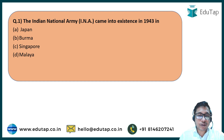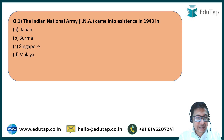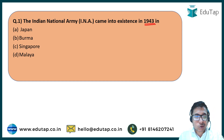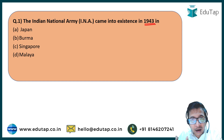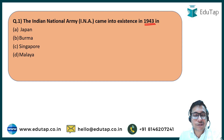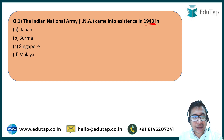Without any delay, let's start. Question number one: The Indian National Army (INA) came into existence in 1943 in which country? The INA, also known as Azad Hind Fauj, was formed by Subhash Chandra Bose to attack the Indian subcontinent from the eastern side during World War Two. The options are Japan, Burma, Singapore, or Malaya (present-day Malaysia).